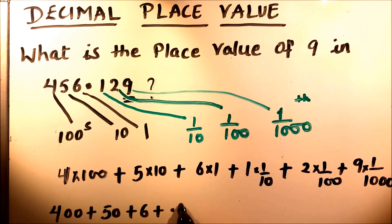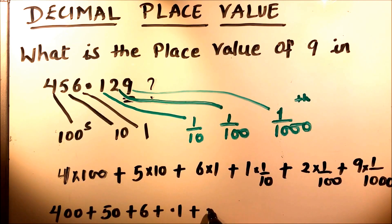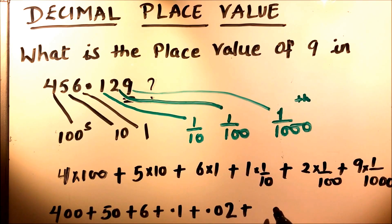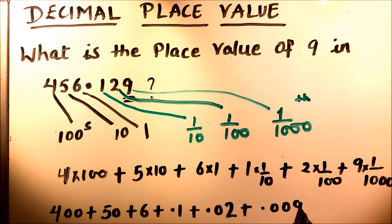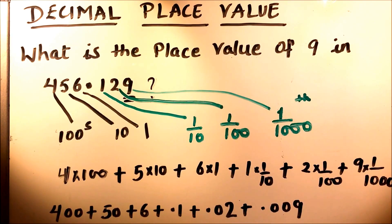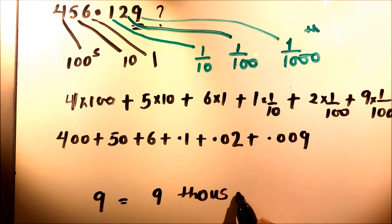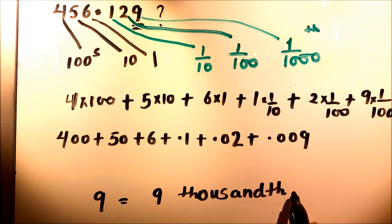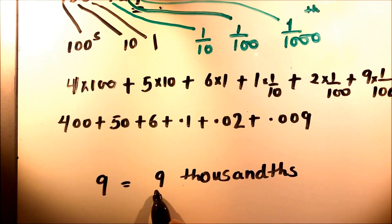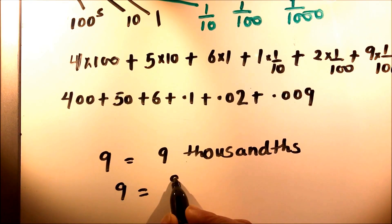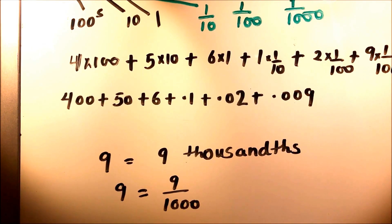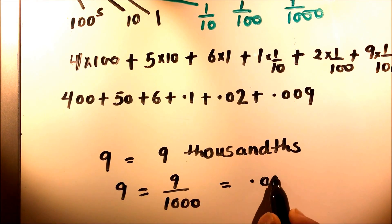1 tenth is 0.1 plus 2 hundredths is 0.02 and 9 thousandths is 0.009. So the place value of 9 here is 9 thousandths. It is written as nine thousandths or 9 over 1000 or 0.009.